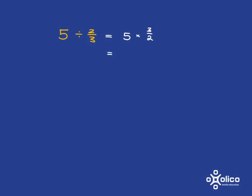And so that will be, well, 5 is just 5 over 1, remember? And so then what you'll get is 5 times 3 is 15, 1 times 2 is 2, so you get the answer of 15 over 2.